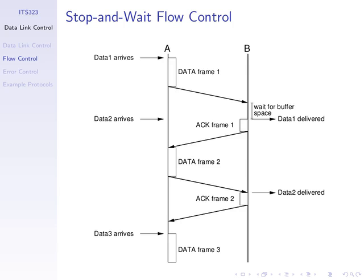This example shows one specific instance where computer B receives the first data frame and then has no space in the buffer for a second data frame. So there's a short time where the buffer is full at the receiver and therefore the ACK does not come back. We wait for space to become available in the buffer before we send the ACK. Even though we receive the data, we don't acknowledge it until we have space for another data frame. That's the flow control working at destination B. Of course, if we have space, then we can immediately send the ACK.